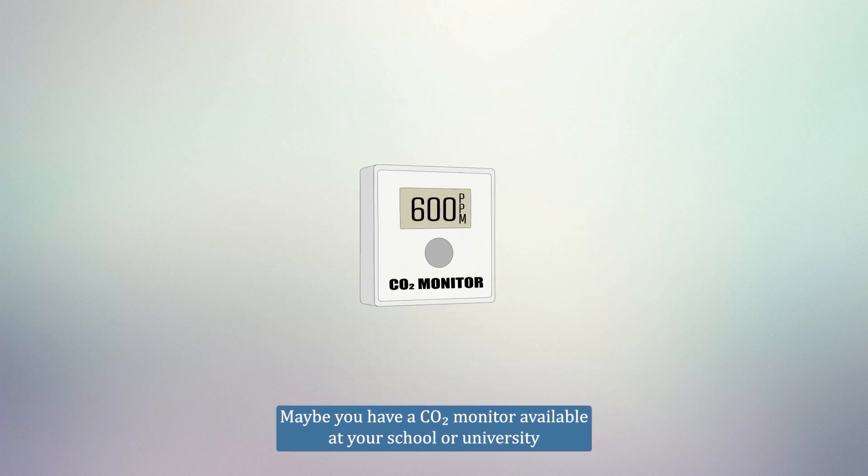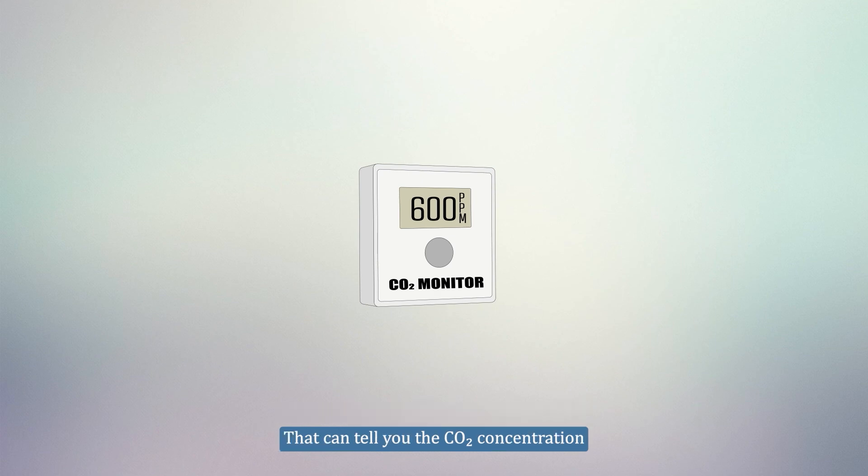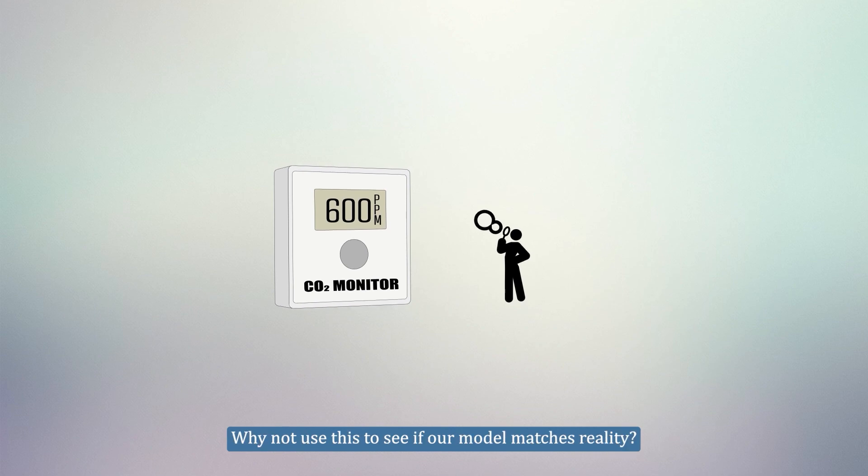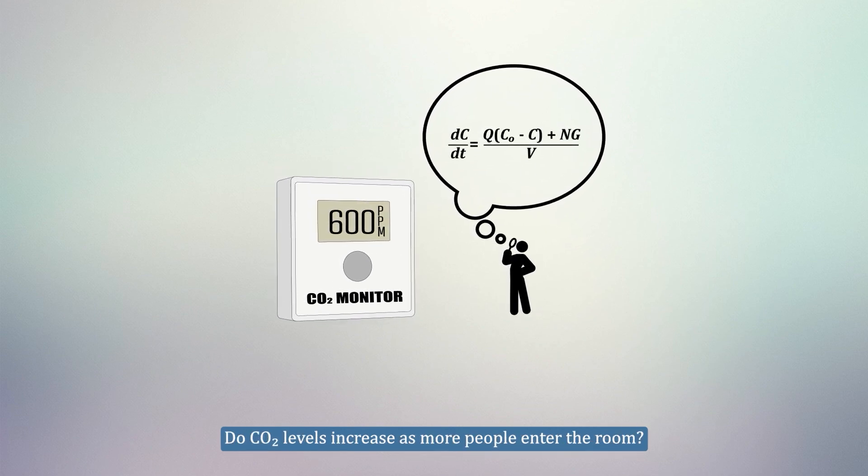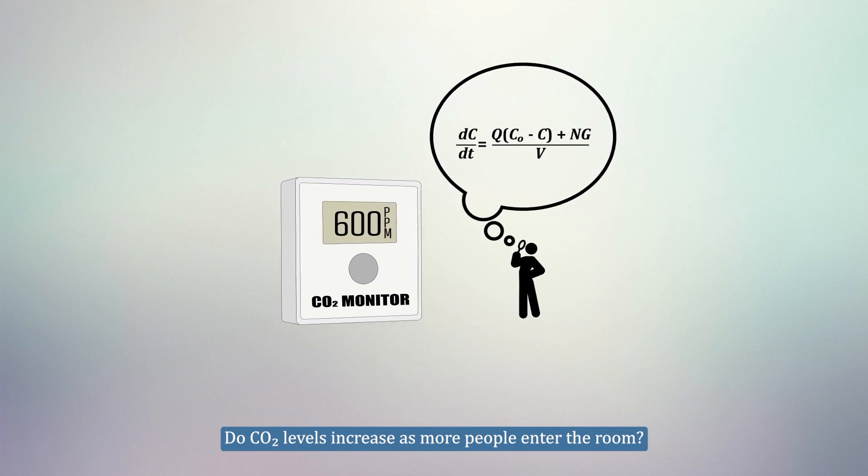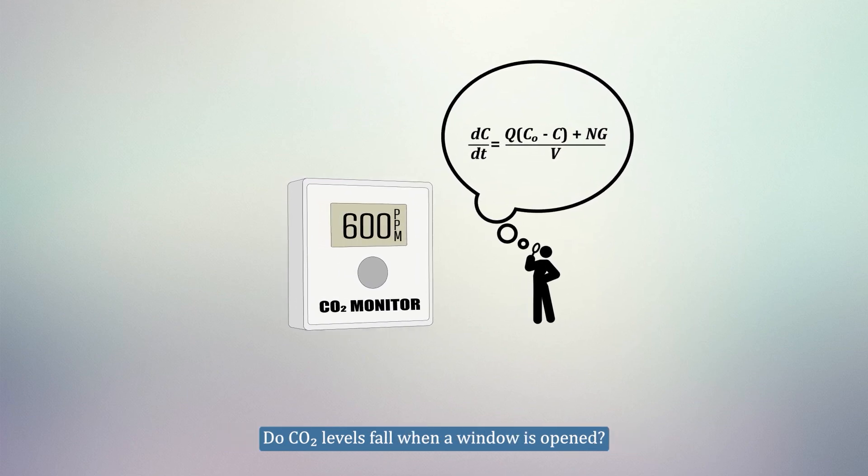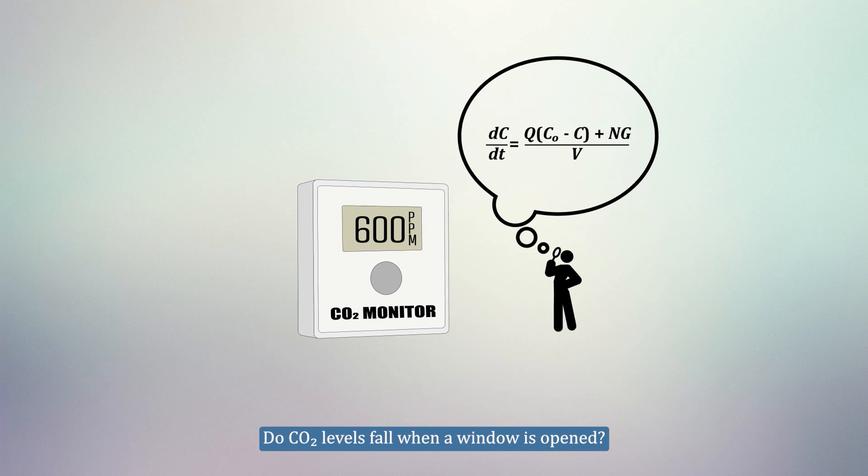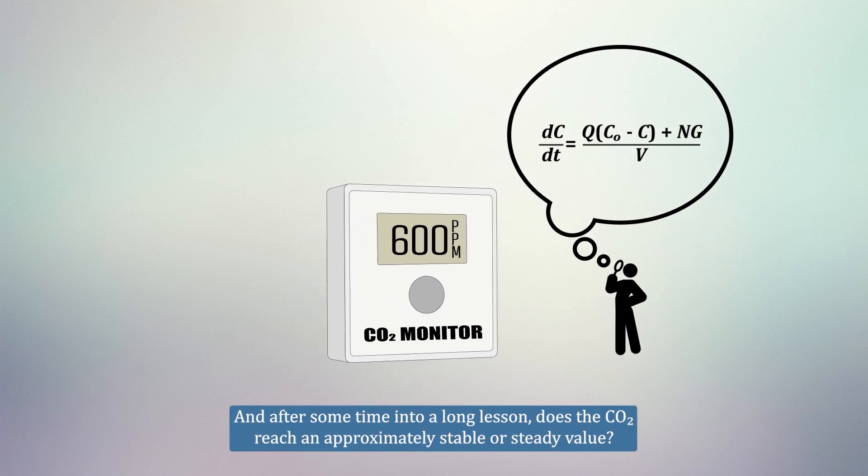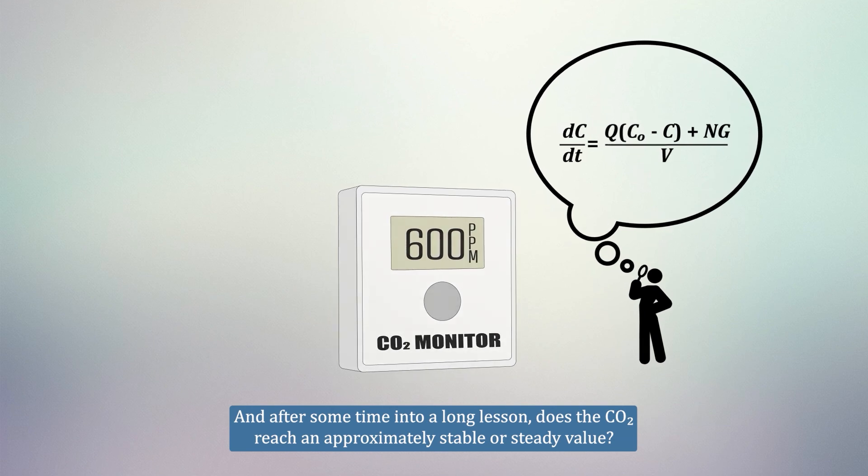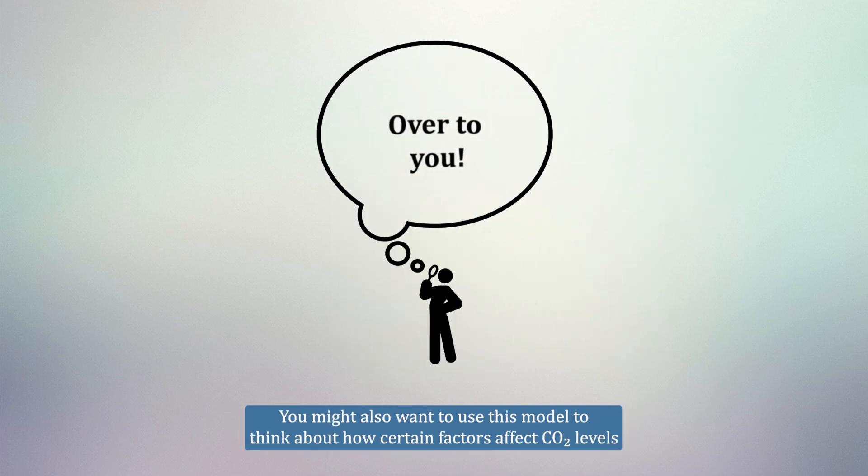Maybe you have a CO2 monitor available at your school or university that can tell you the CO2 concentration. Why not use this to see if our model matches reality? Do CO2 levels increase as more people enter the room? Do CO2 levels fall when a window is opened? And after some time into a long lesson, does the CO2 reach an approximately stable or steady value?